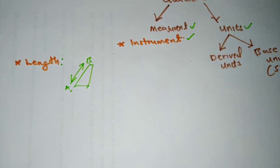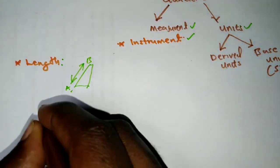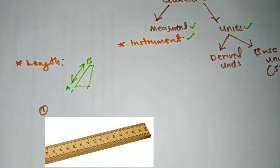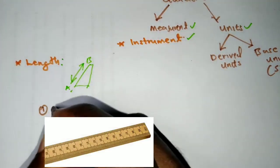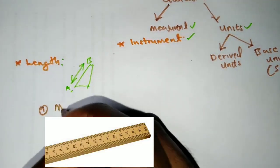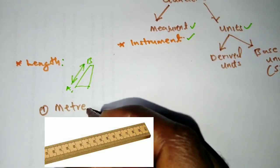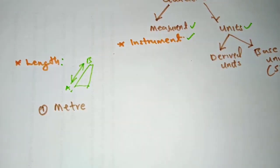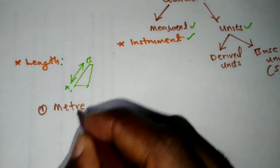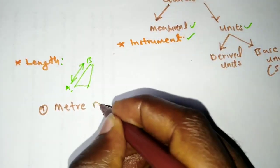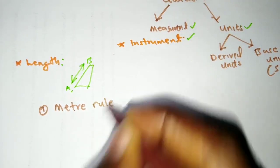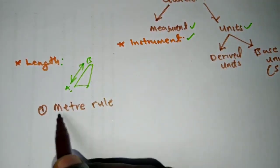So now, when we're measuring length, there are several types of instruments that we can use. Number one is the meter rule.